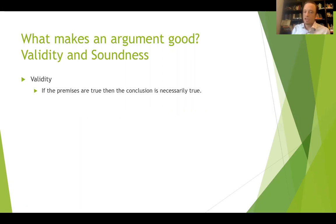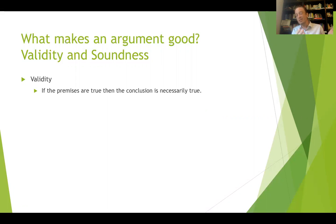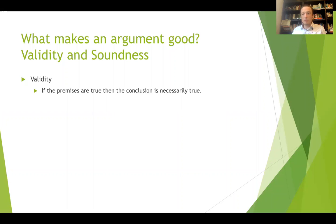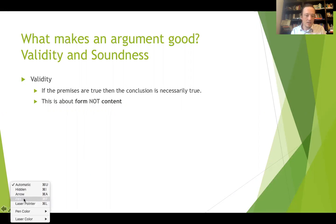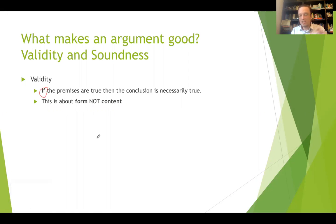In a valid argument, if the premises are true, then the conclusion is necessarily true. Another way to say that: in a valid argument, if the premises were true — you may assume that they're true, give the arguer the benefit of the doubt — then the conclusion logically follows from those premises. It has to be true; there's no world in which it could be false. Notice this is about form, not content. The 'if' here is key — it's if the premises were true, not saying the premises have to be true.